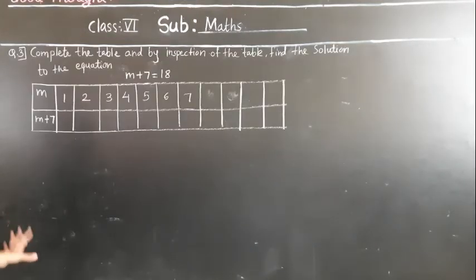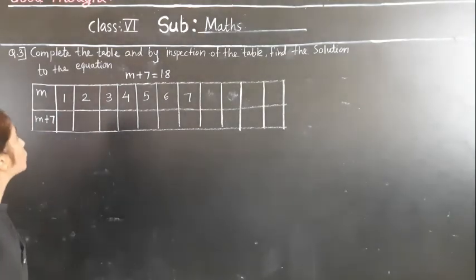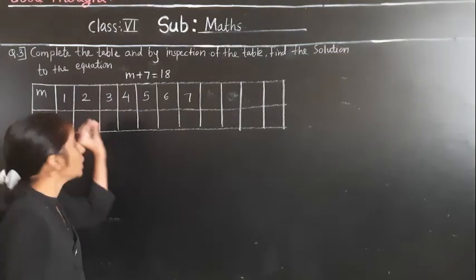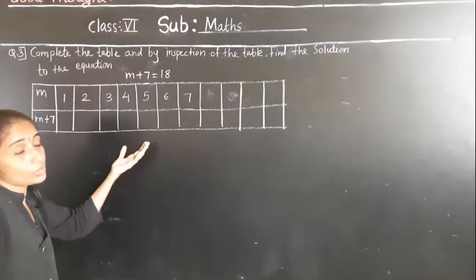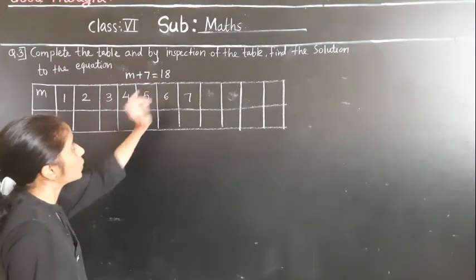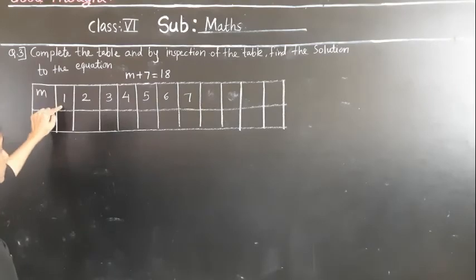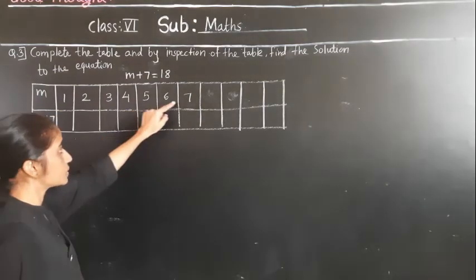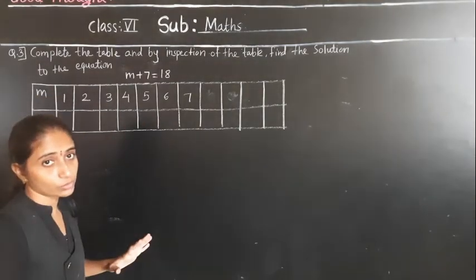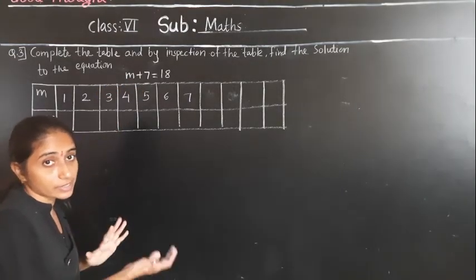Question number 3: complete the table and by inspection of the table, find the solution to the equation. We just observe — no need to solve each and every example. The given equation is N plus 7 is equal to 18. The value of M given is 1, 2, 3, 4, 5, 6, 7, and so on. Which number satisfies this equation — meaning which number put in place of M gives LHS equal to RHS?